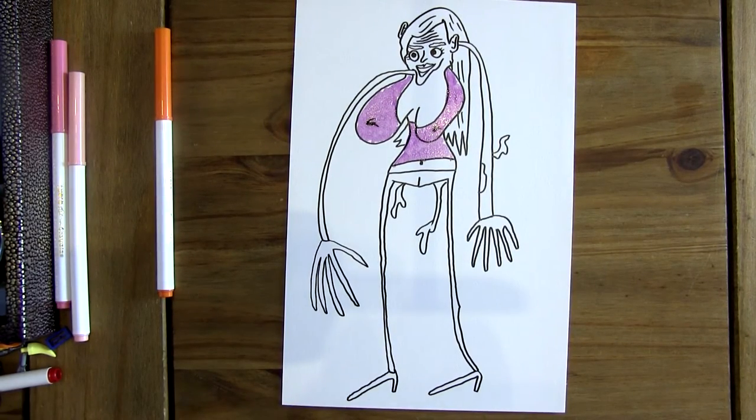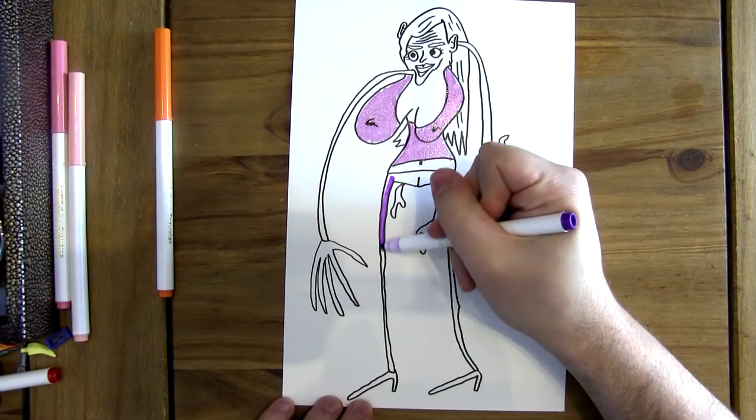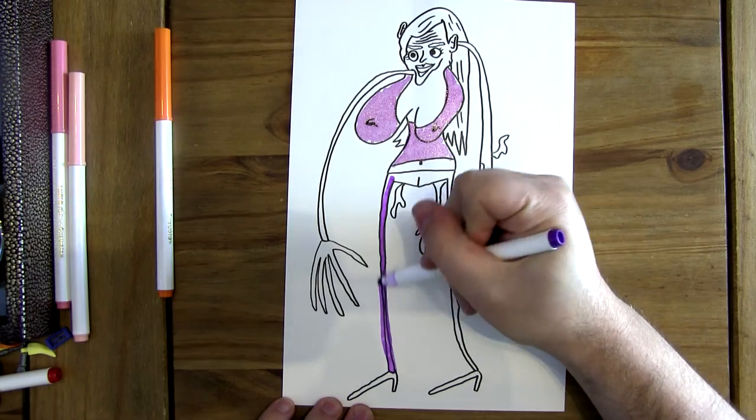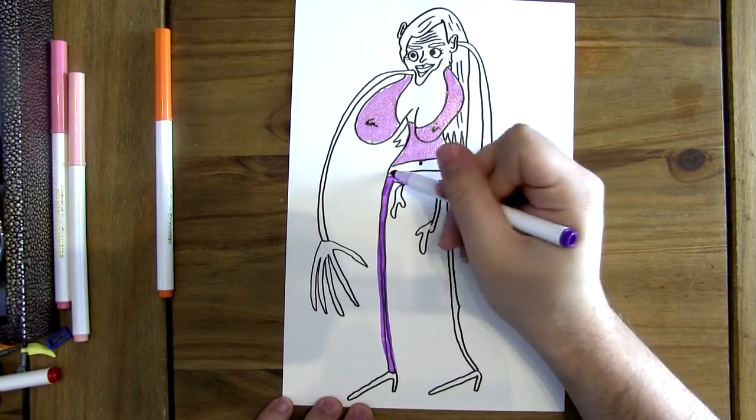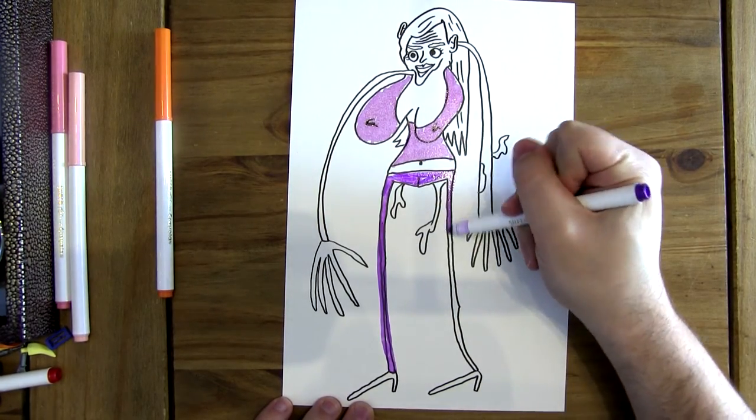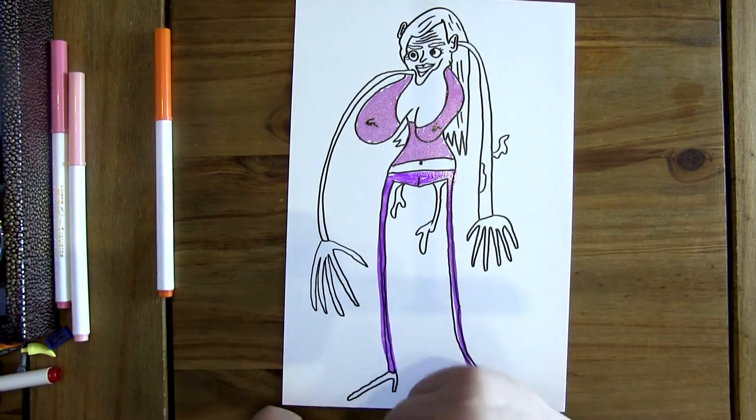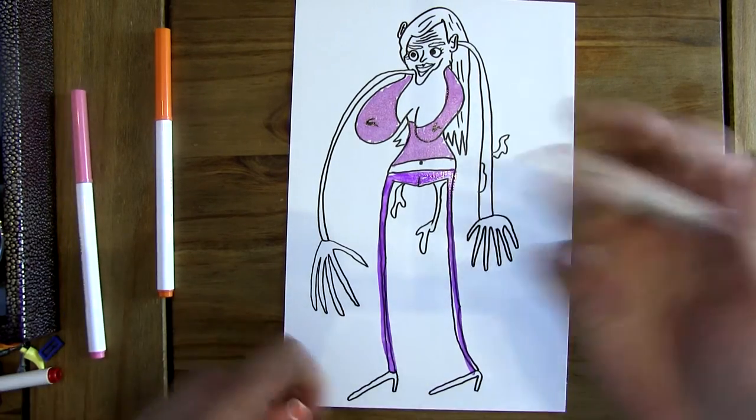In terms of trousers you want a nice solid purple for that, just draw it like that. There we go, and then on the other side as well.